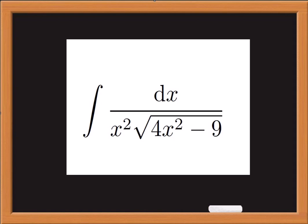Greetings all. Today we have this integral calculation. It is an indefinite integral of dx over x squared times the square root of 4x squared minus 9. We are going to use two modes of substitution to solve this integral.